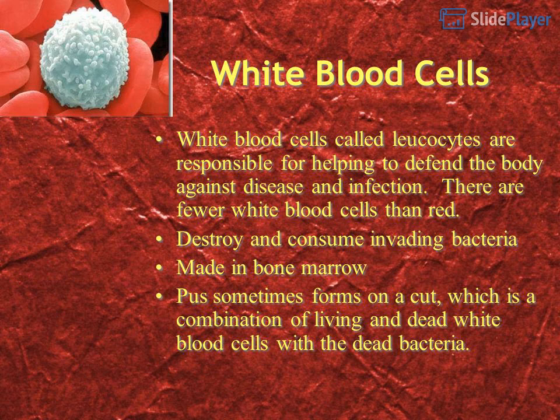White blood cells, called leukocytes, are responsible for helping to defend the body against disease and infection. There are fewer white blood cells than red. They destroy and consume invading bacteria and are made in the bone marrow. Pus that forms on a cut is a combination of living and dead white blood cells with dead bacteria.